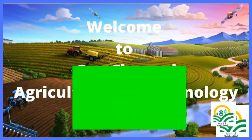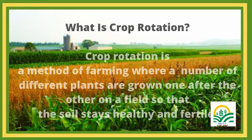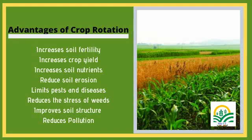What is Crop Rotation? Crop rotation is a method of farming where a number of different plants are grown one after the other on a field so that the soil stays healthy and fertile.